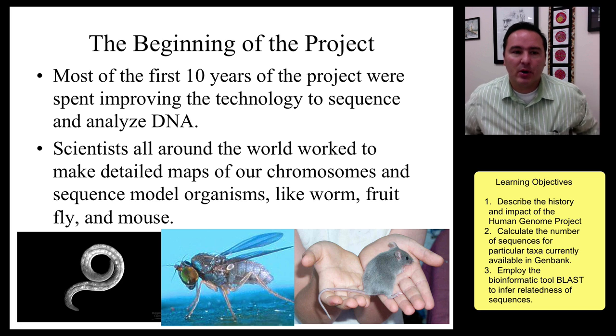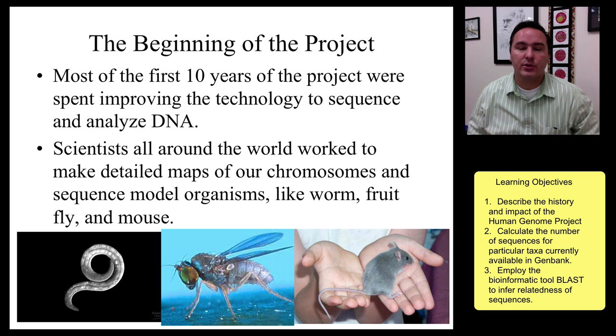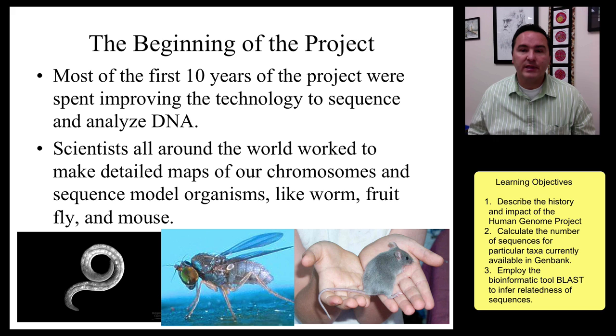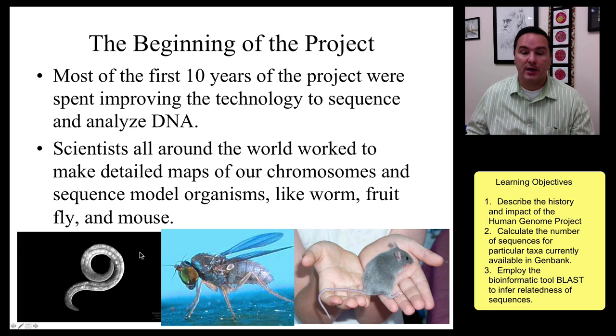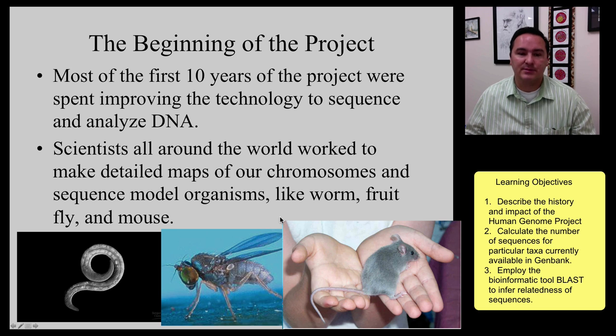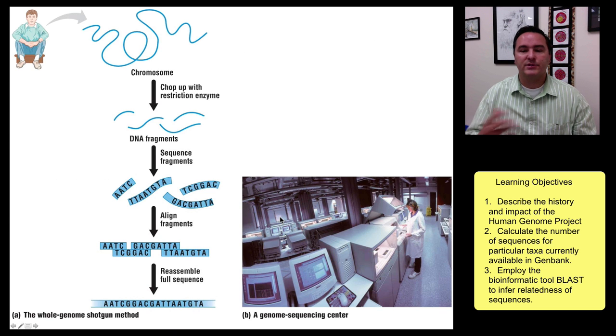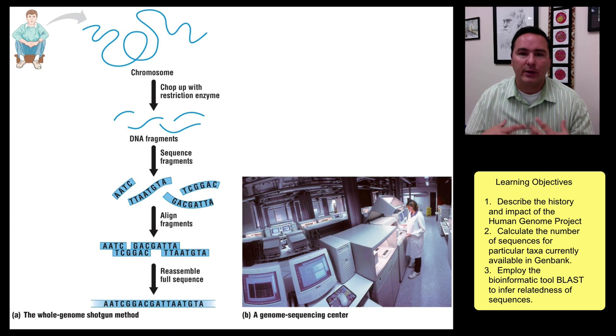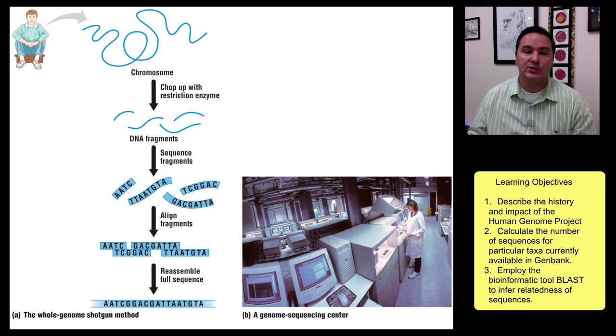So in the beginning of this project, most of the first years were used in improving the technology and trying to figure out how to sequence DNA in a more efficient manner. And so this was mostly done actually on other organisms like this worm, fruit flies, mice, and other organisms as well. But once all that was figured out, then we could really start to work on the Human Genome.